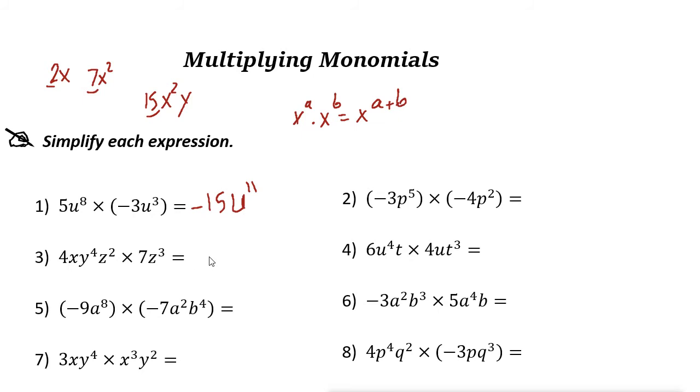4 times 7 is 28. Then here we have x, y to the power of 4, and z to the 2 and 3. Add the powers, is just z to the power of 5.